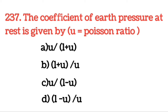Next question: The coefficient of earth pressure at rest is given by μ/(1−μ), जहां μ Poisson's ratio होता है। Coefficient of earth pressure जो है rest में इस प्रकार से define कर सकते हैं: μ/(1−μ).